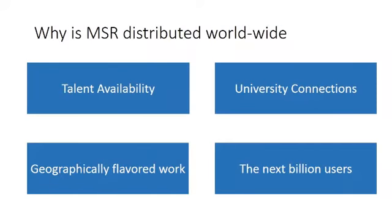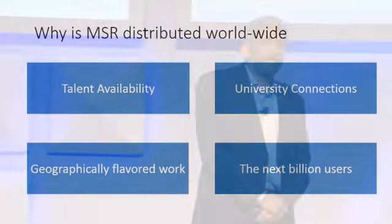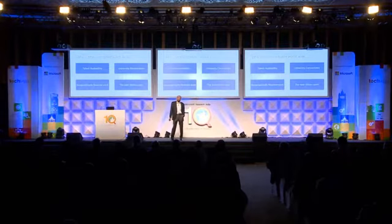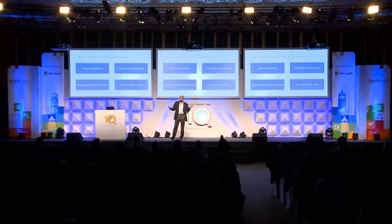Why is Microsoft Research distributed worldwide rather than just near the mothership in Redmond? First and foremost, we go where the talent is. The mountain will go to Mohammed if needed. Talent is widespread all over the world, so we are on multiple continents. We also go where there are university connections — we often locate research labs near centers of learning. We have a lot of talent and university connections in India, which is why we are here.